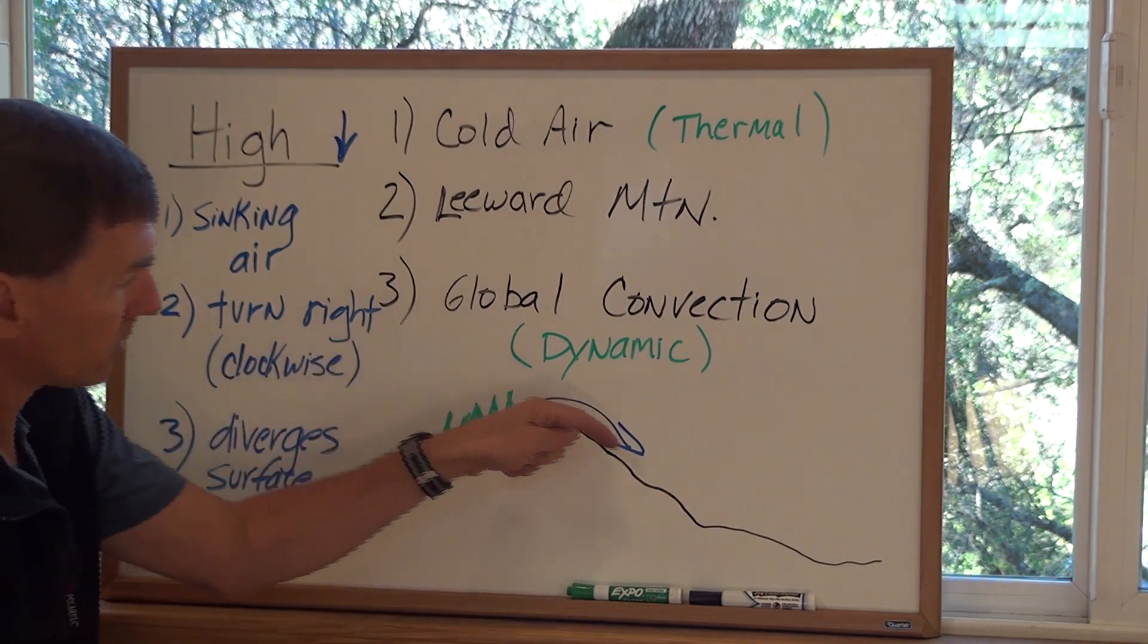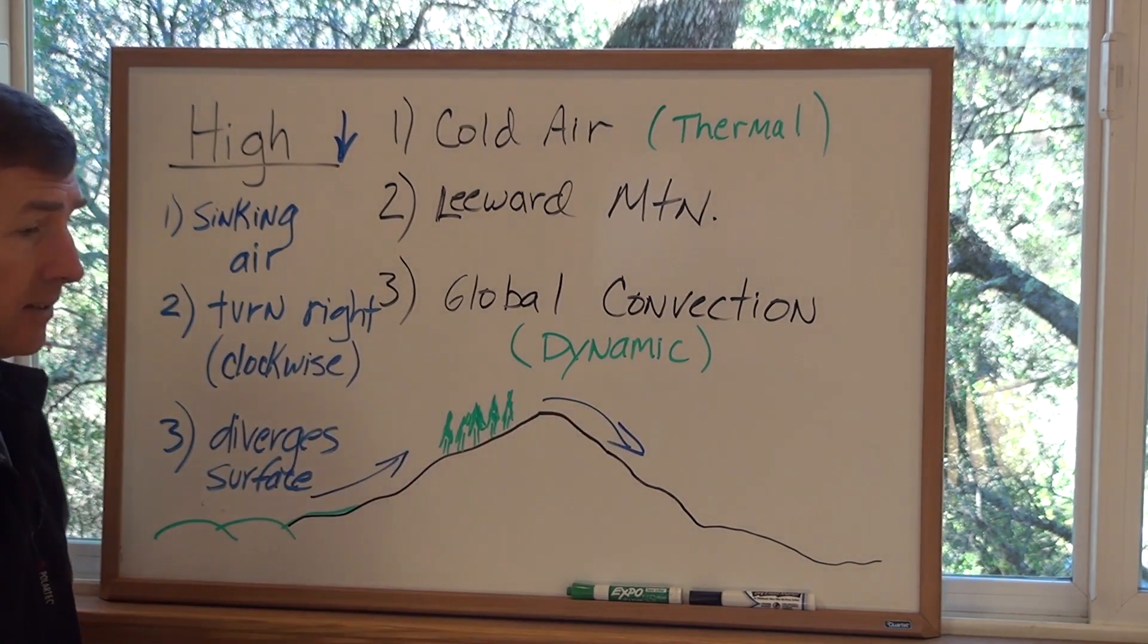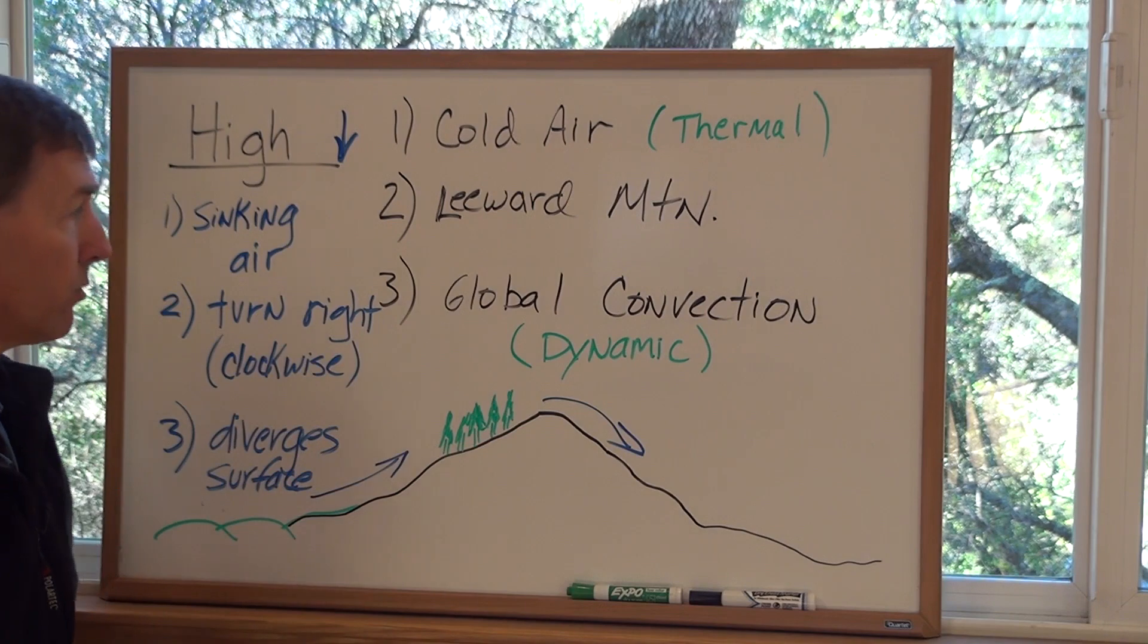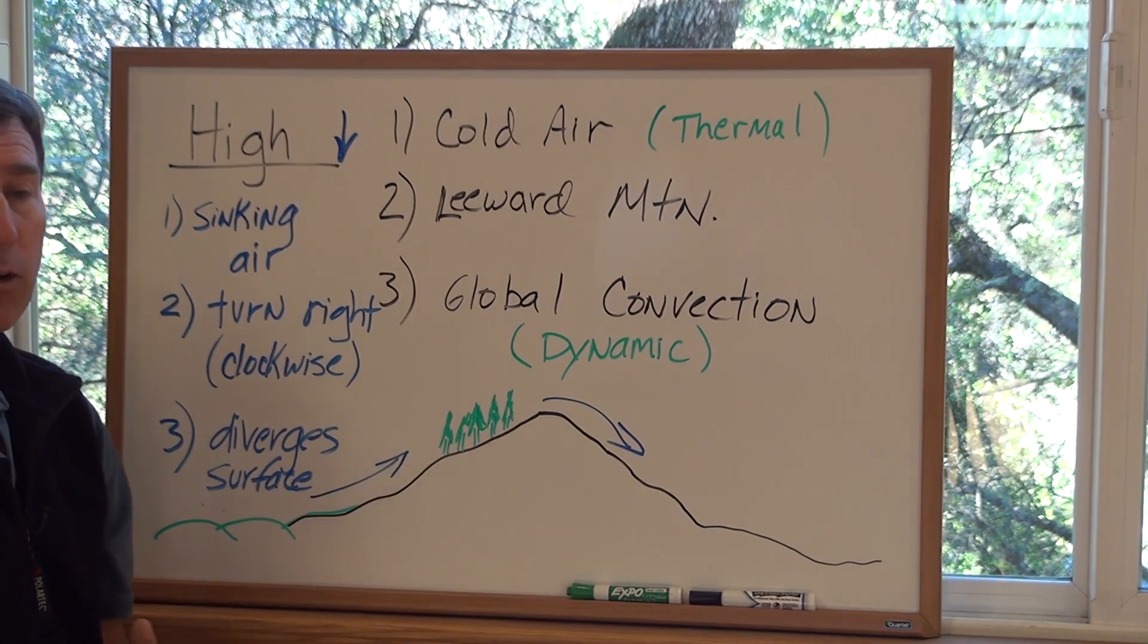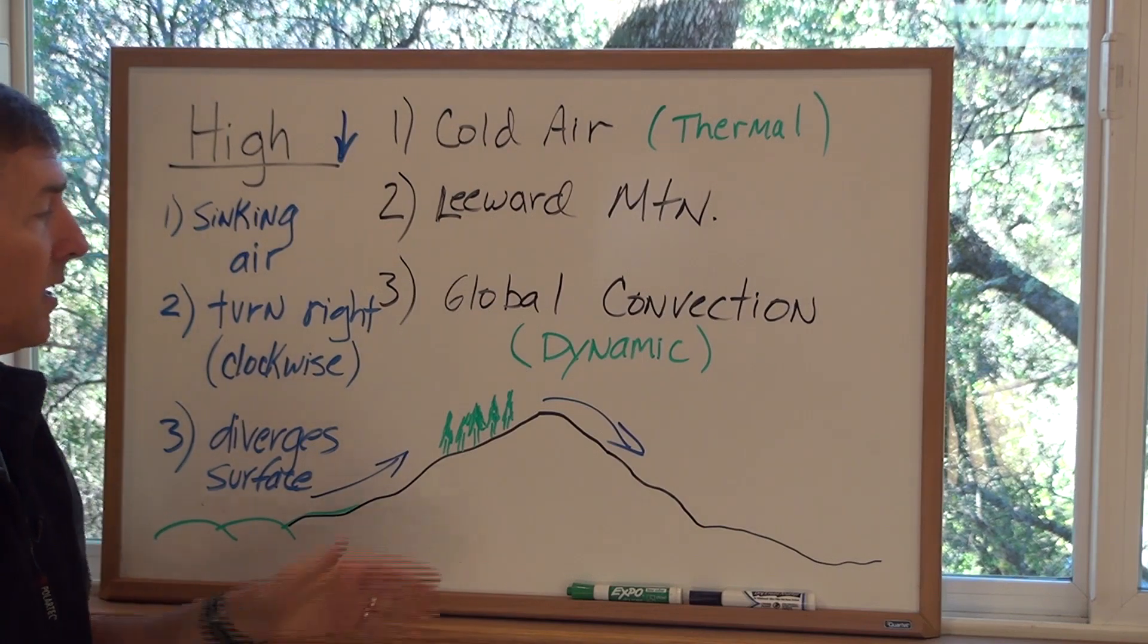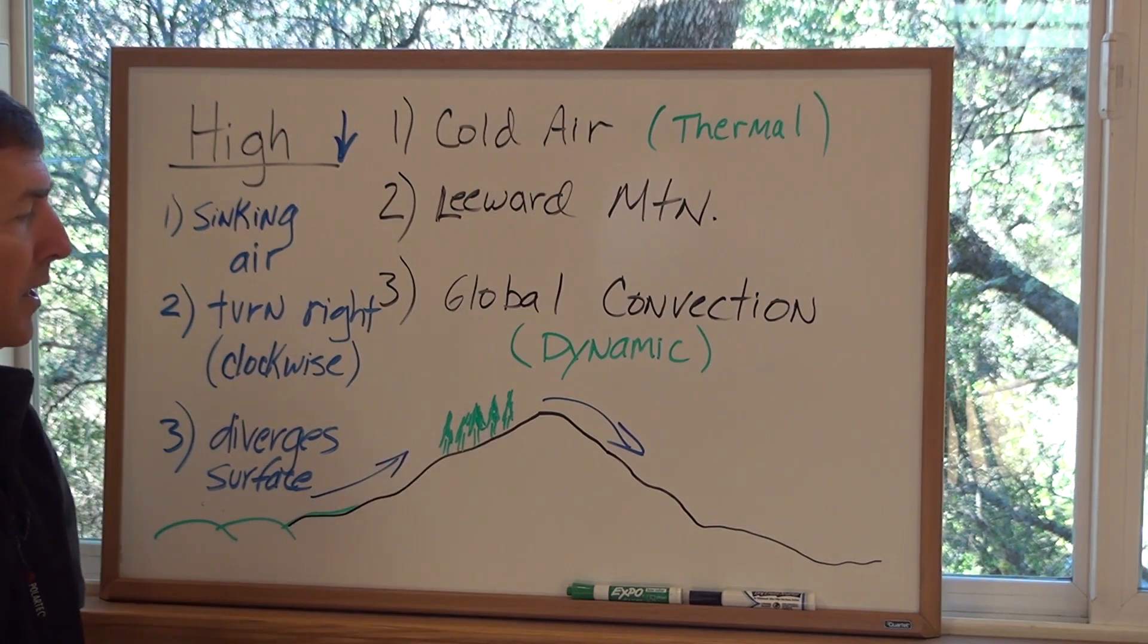So in theory, as this air is going down the backside of the Sierra Nevada, it is turning to the right because of the Coriolis force. There's a lot of friction here and that's going to affect things. The Coriolis force isn't very strong near the surface, so chances are it's pretty weak as the air descends on the backside of the mountain.